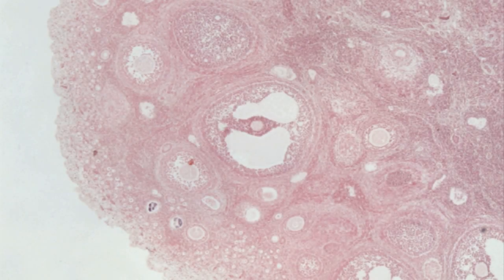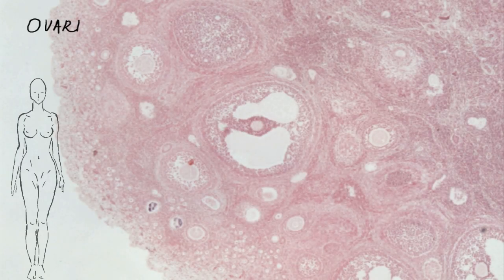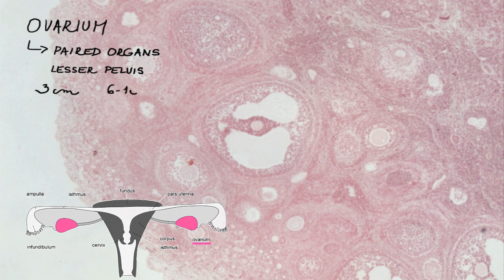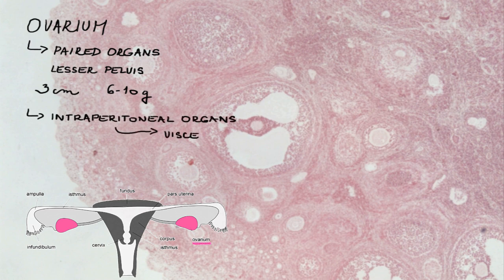Today let's look at a part of the female reproductive system called an ovary. Ovaries are paired organs located in the lesser pelvis on both sides of the uterus. They are almond-shaped bodies approximately three centimeters long, weighing from six to ten grams. Ovaries are located within the peritoneum, which means they are intraperitoneal organs covered by visceral peritoneum.